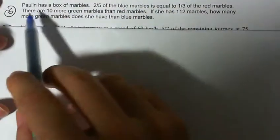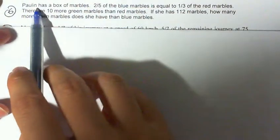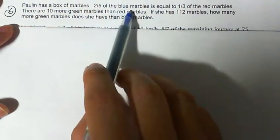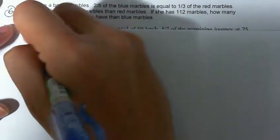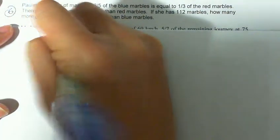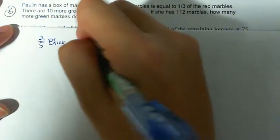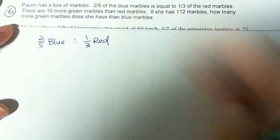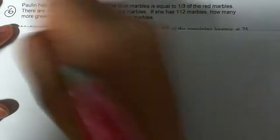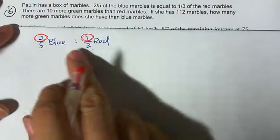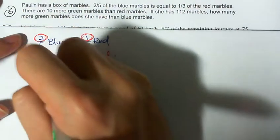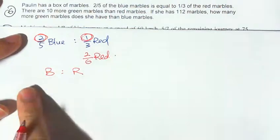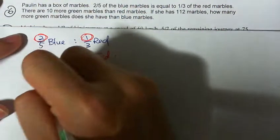This is Matt's Set 7, Question 6. Pauline has a box of marbles. Two-fifths of the blue marbles equals one-third of the red marbles. We make the numerators the same because they represent the same quantity. Two-fifths becomes 2/6 for red, so in actual fact blue to red ratio is 5 to 6 — we take the denominators.